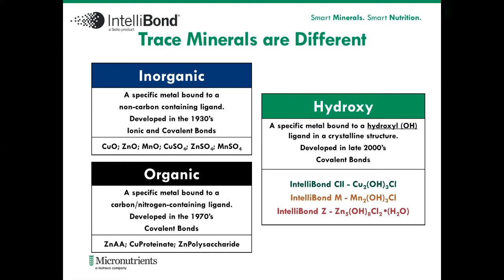Along came the organic trace minerals in the 1970s. These are minerals specifically bound to a carbon or nitrogen containing ligand with covalent bonding, with the goal to develop a mineral that would bypass the rumen and present more of the metal to the small intestine for absorption. Examples of these would be zinc amino acid complex, copper proteinate, or zinc polysaccharide complex.